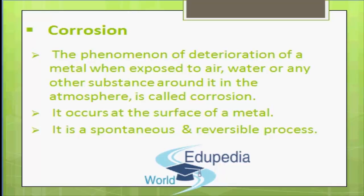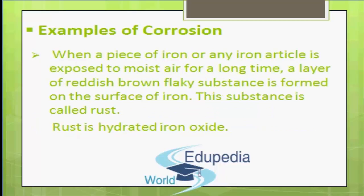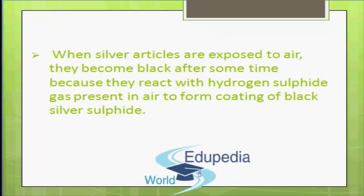Corrosion is a spontaneous and irreversible process. The first example: when a piece of iron or any iron article is exposed to moist air for a very long time, a layer of reddish-brown flaky substance is formed on the surface of iron.